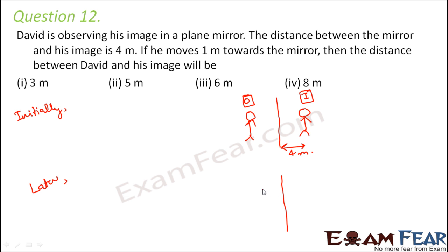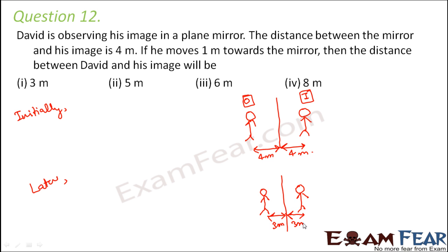After some time, the mirror stays in the same position but David moves 1 meter towards it. In plane mirrors, the image distance equals the object distance, so initially both are 4 meters. After David moves 1 meter closer, his distance from the mirror becomes 3 meters, and so the image distance also becomes 3 meters. Therefore, the total distance between David and his image is 3 plus 3, which equals 6 meters.